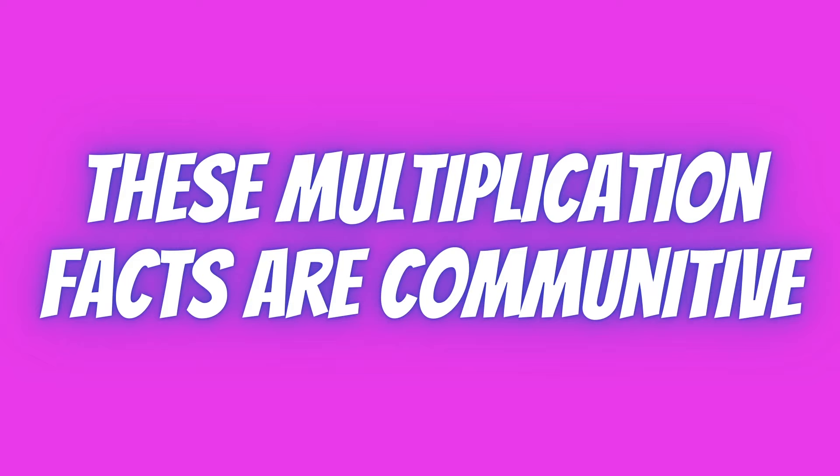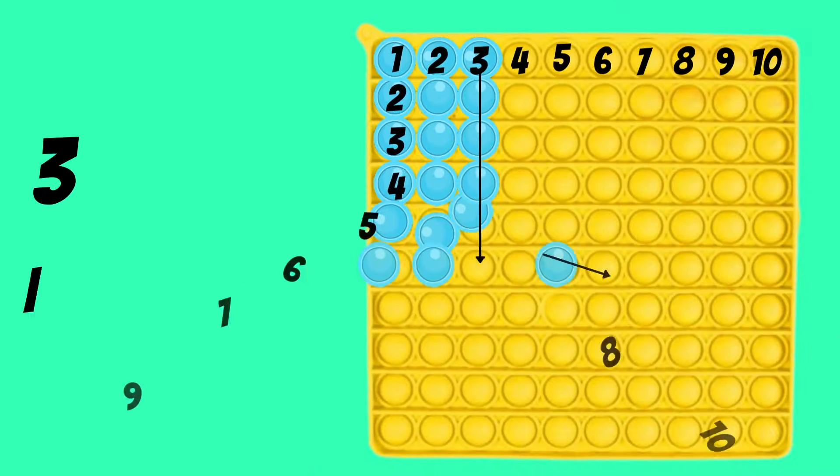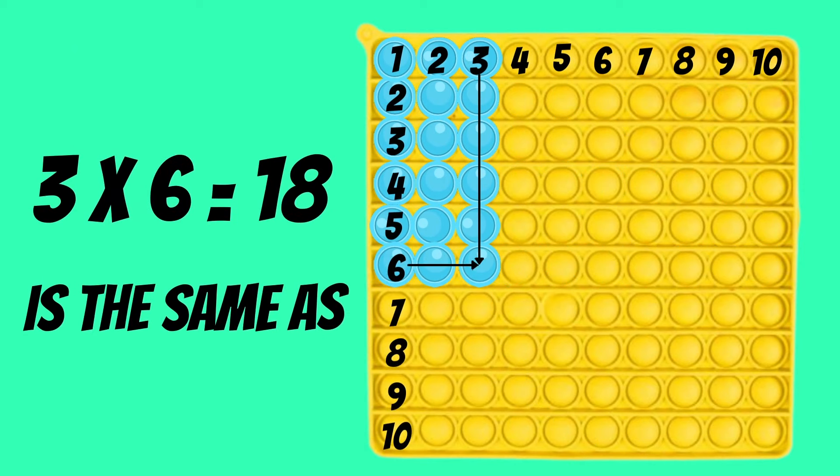These multiplication facts are commutative, meaning that the order doesn't matter. The product or the answer does not depend on which factor or number goes first. So, for instance,